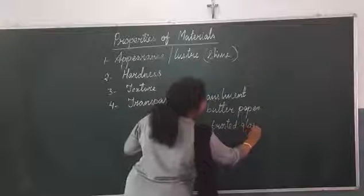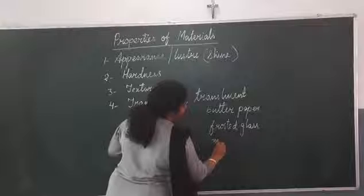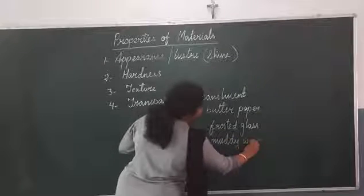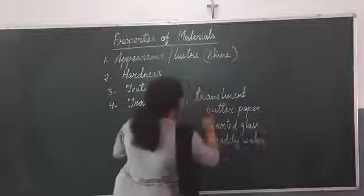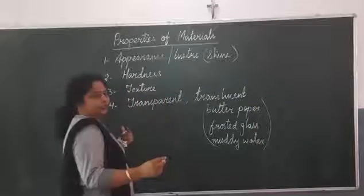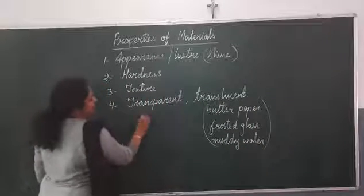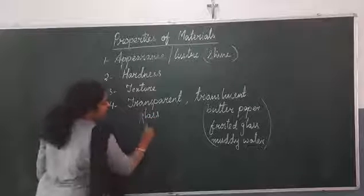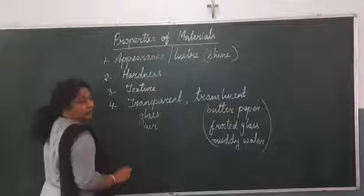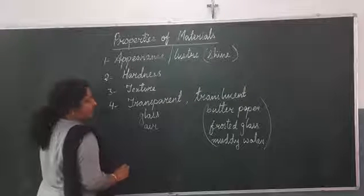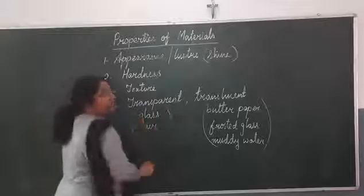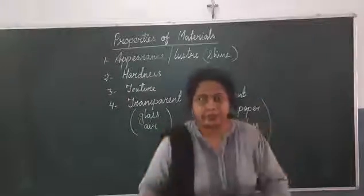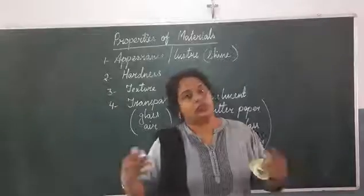Even muddy water is translucent — you cannot see clearly through muddy water. Examples of transparent materials are glass, through which you can see very clearly, and air. In the same way, still water — water which is not muddy — is also transparent.